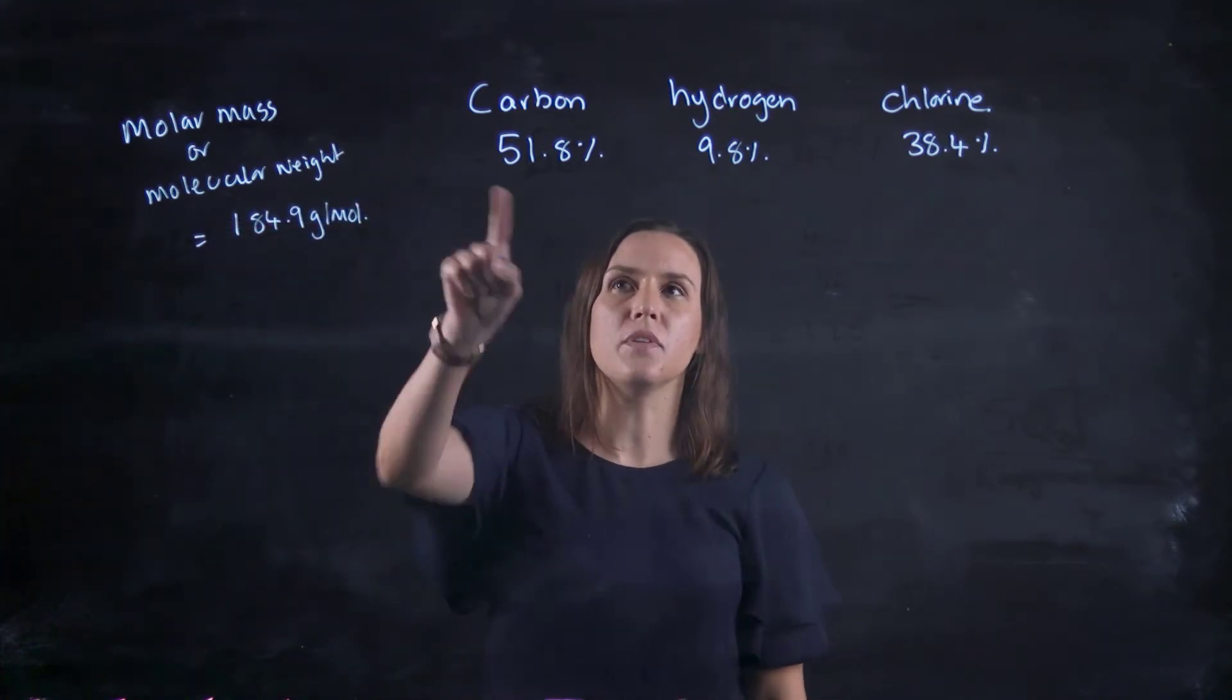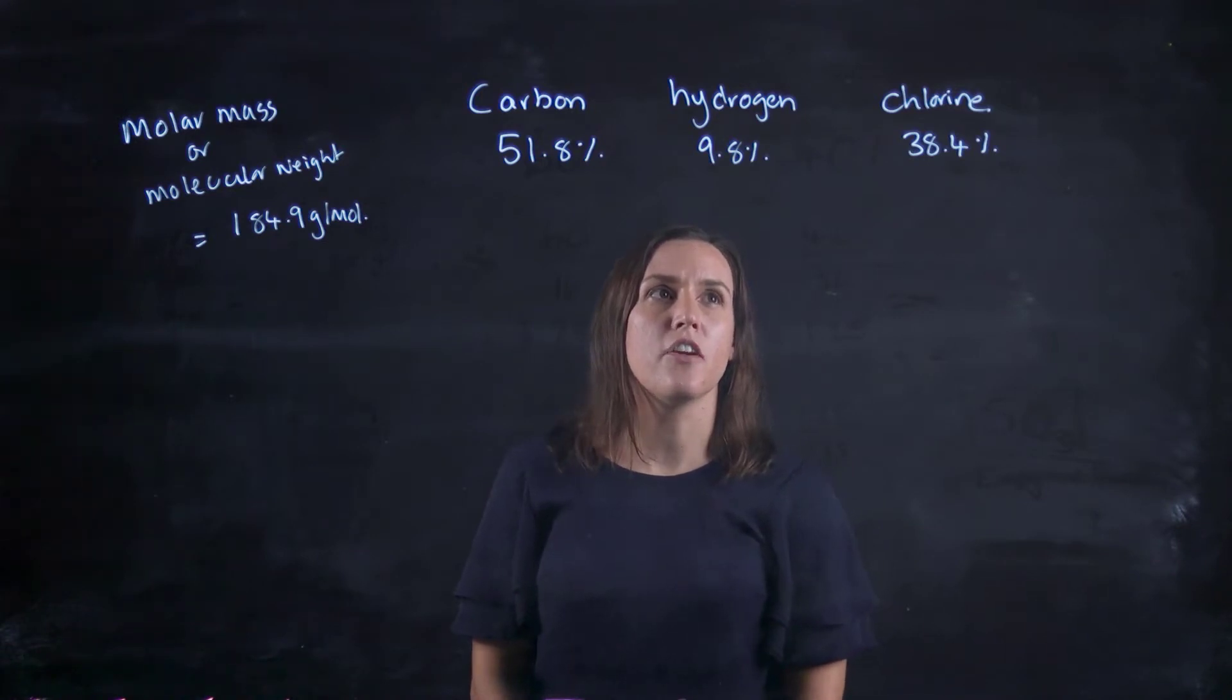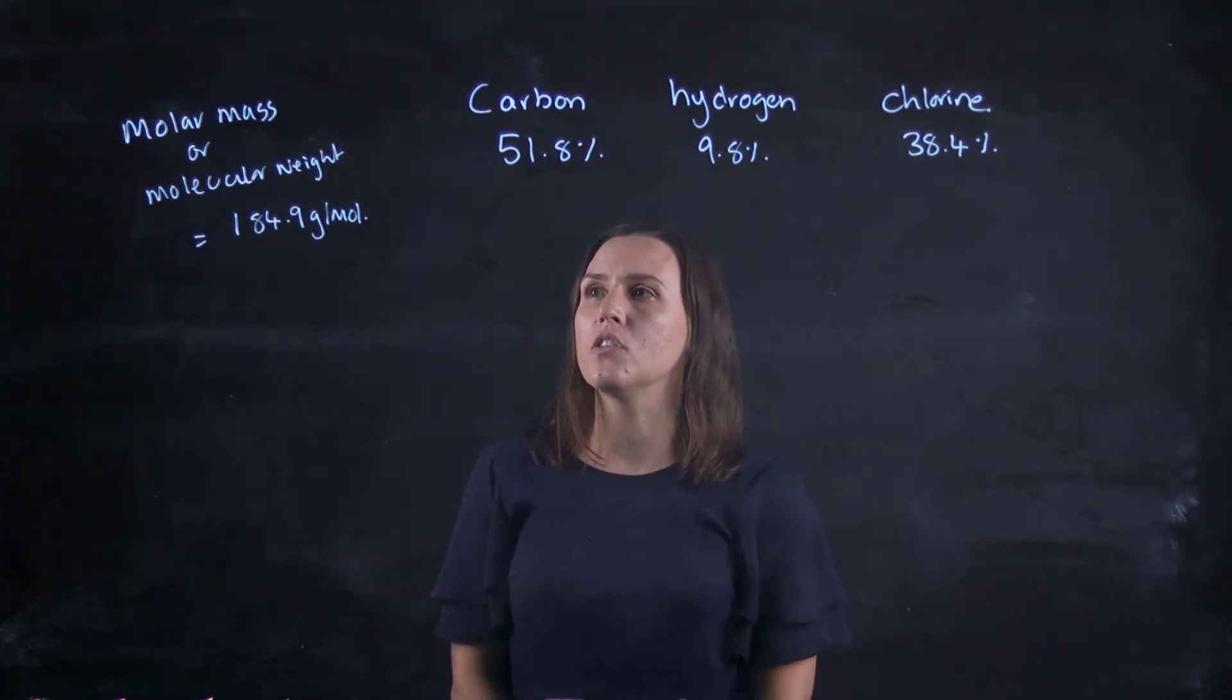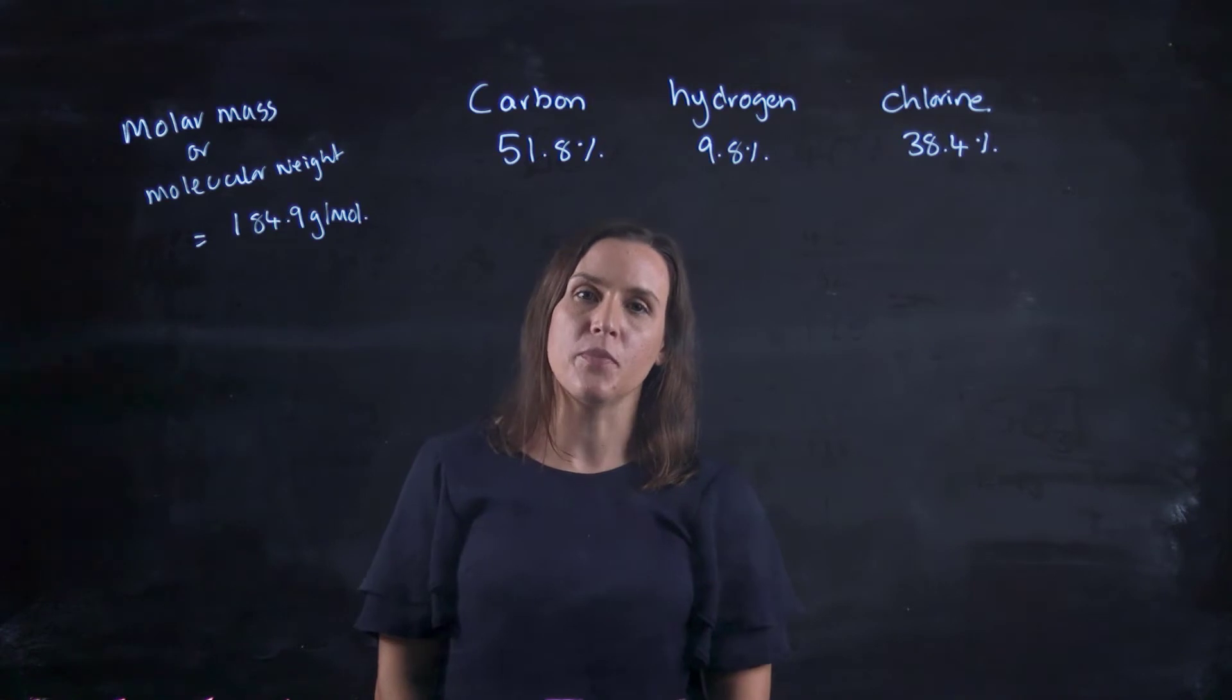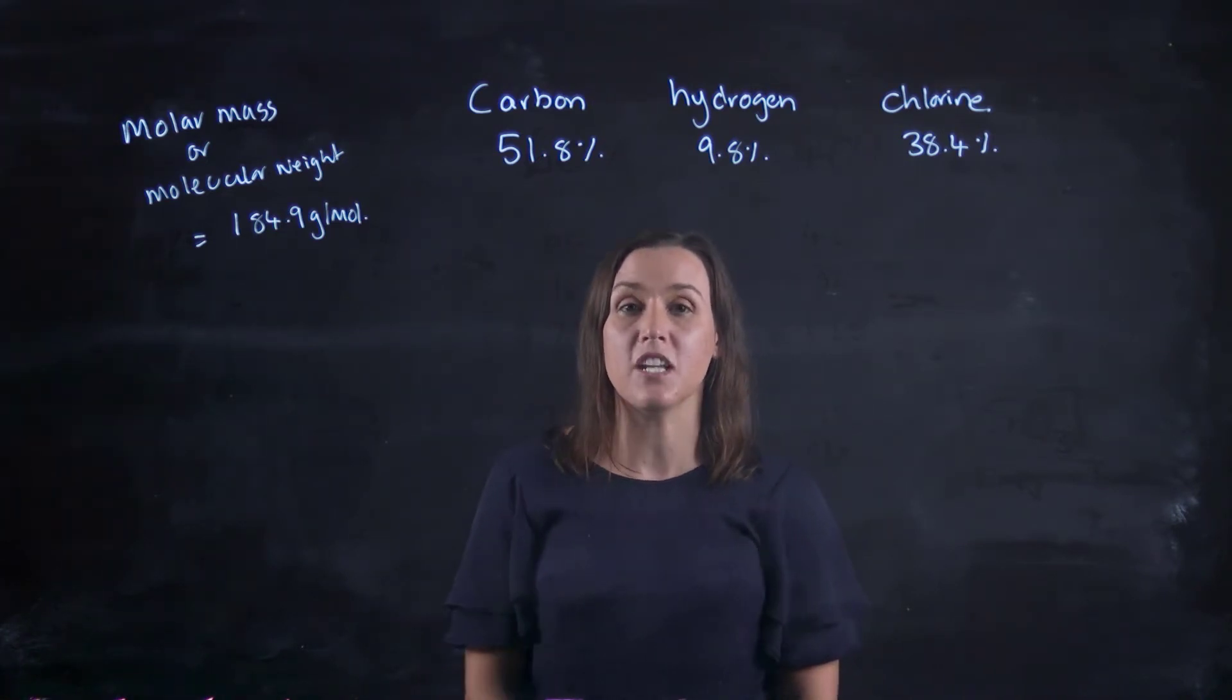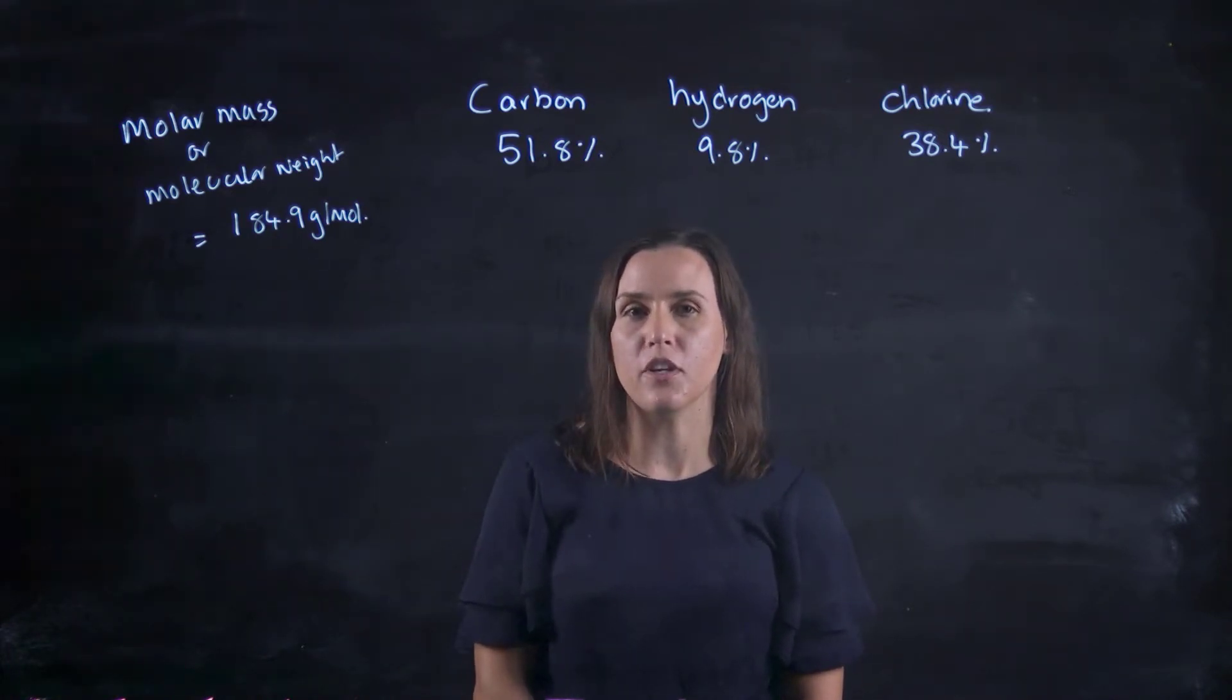Okay, so I've got carbon 51.8%, hydrogen 9.8%, and chlorine 38.4%. And I'm told the molecular mass or the molecular weight is 184.9 grams per mole. So first of all, I work out the empirical formula and then I see how many times that empirical formula will fit into 184.9.